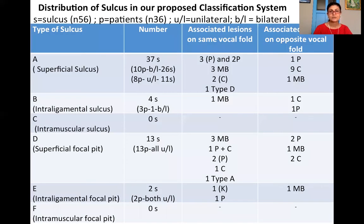Interestingly, 61.7% of these sulci were only diagnosed during microlaryngoscopy and were missed during stroboscopy. This slide gives an idea of exactly how many sulci we had in the various proposed types. The most common were type A, with 37 sulci. Type C and F had zero sulci within our study duration, though we have seen such deep sulci outside of this period.